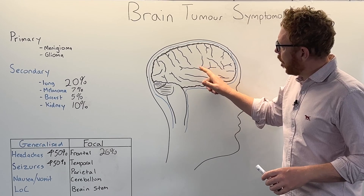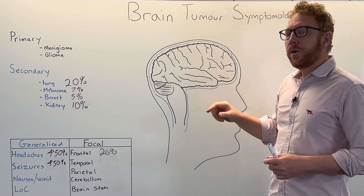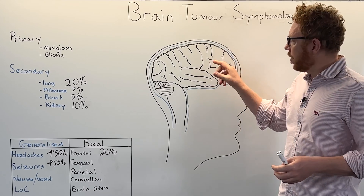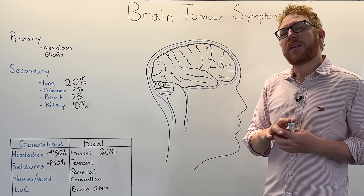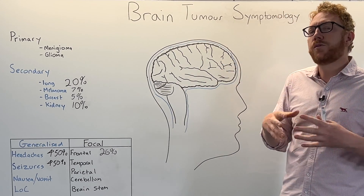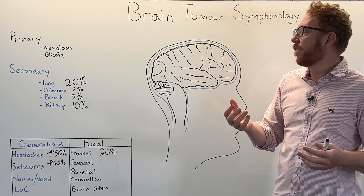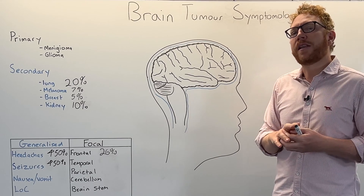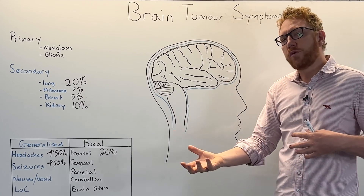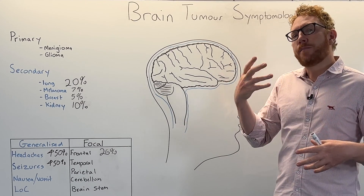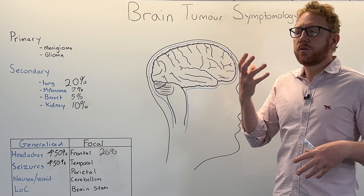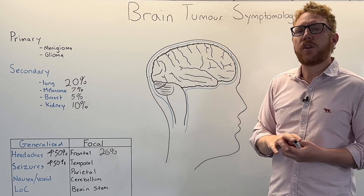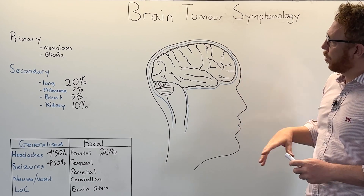Another region of the frontal lobe is Broca's centre, which controls the motor production of speech. Tumours impacting this area can change speech production, which we call expressive aphasia. The frontal lobe also governs more executive functions such as mood, personality, memory, and more challenging tasks like planning, all of which can be impacted by frontal lobe tumours.